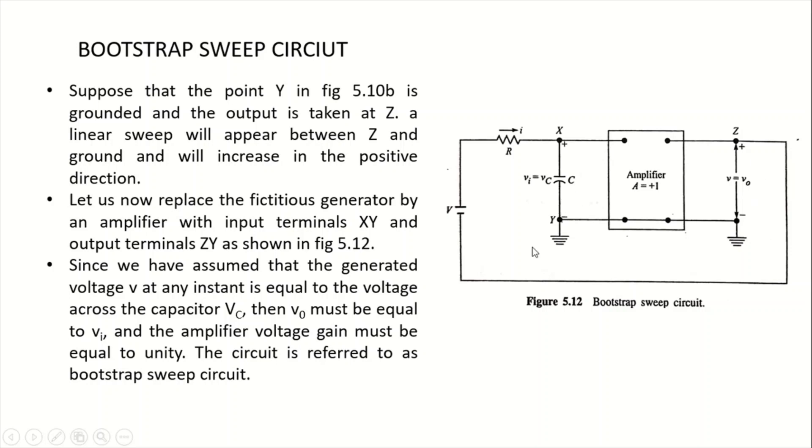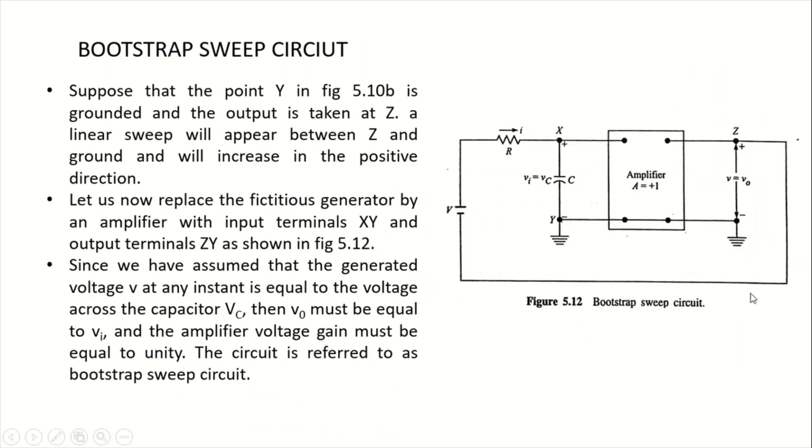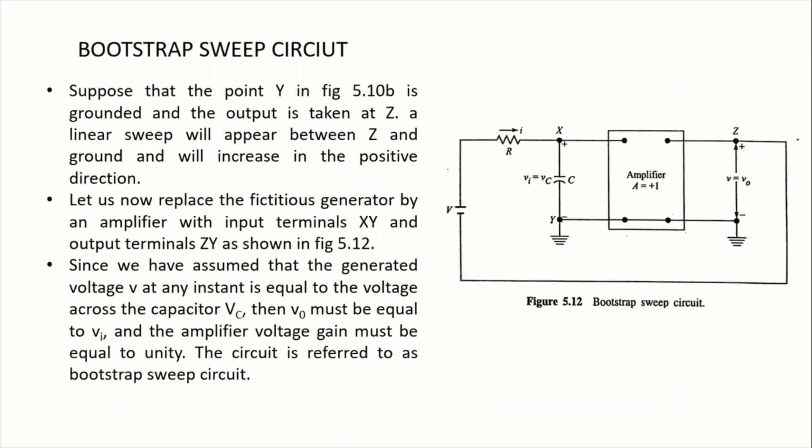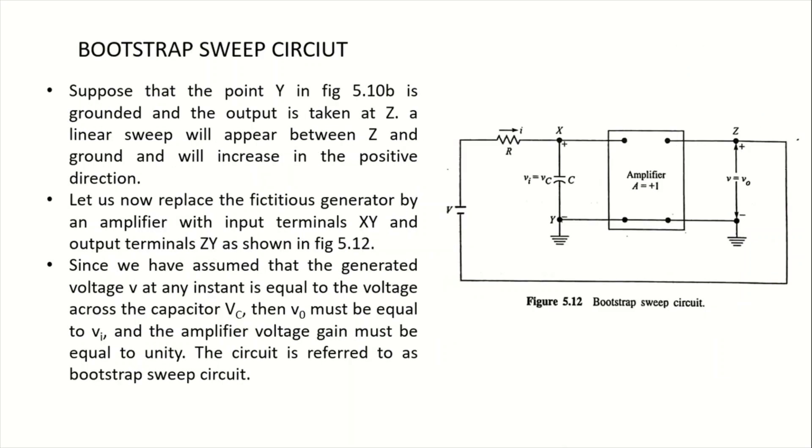Since we have assumed that the developed capacitor voltage and the generated voltage at any instant will be equal, then Vo must be equal to Vi. So the amplifier mode voltage gain must be unity, because Vo equals Vi. This circuit is referred to as a bootstrap sweep circuit. If point Z is grounded, it refers to Miller's integrator circuit. If point Y is grounded, it forms a bootstrap circuit. The main difference is that in a Miller circuit the output goes in negative direction, while in a bootstrap sweep circuit the output goes in a positive direction. With these basics, we will discuss transistor-based Miller circuits next.